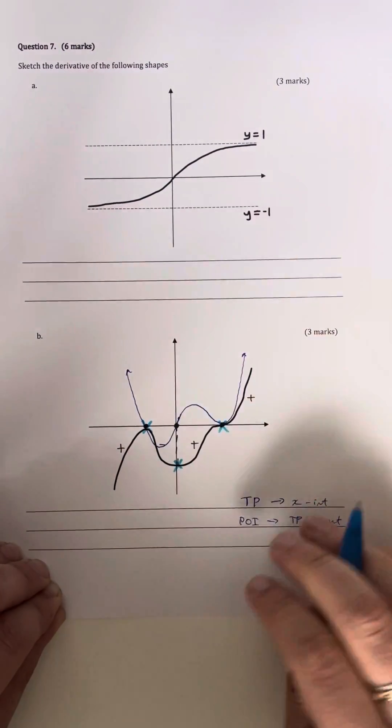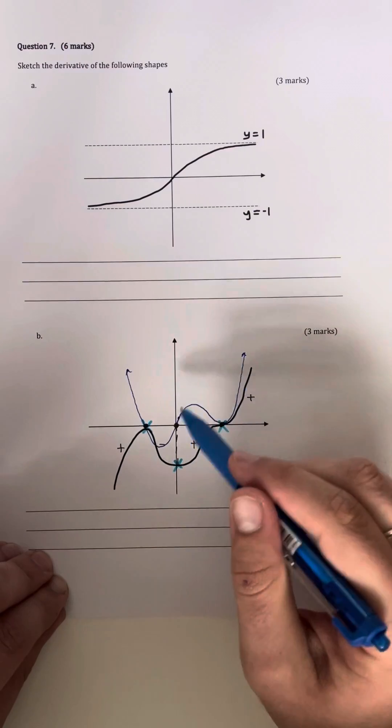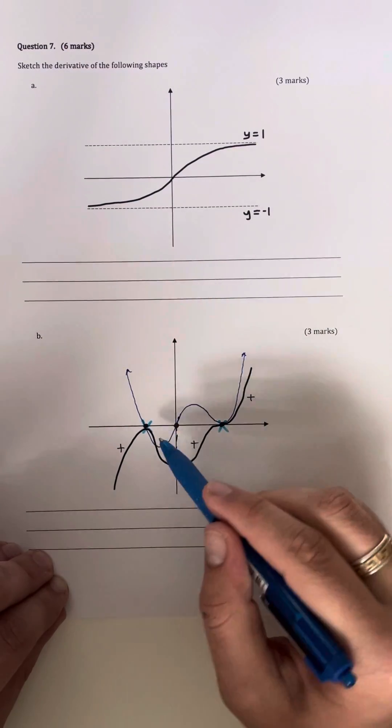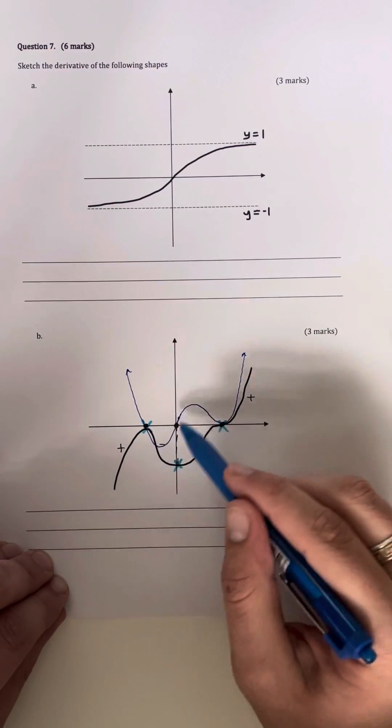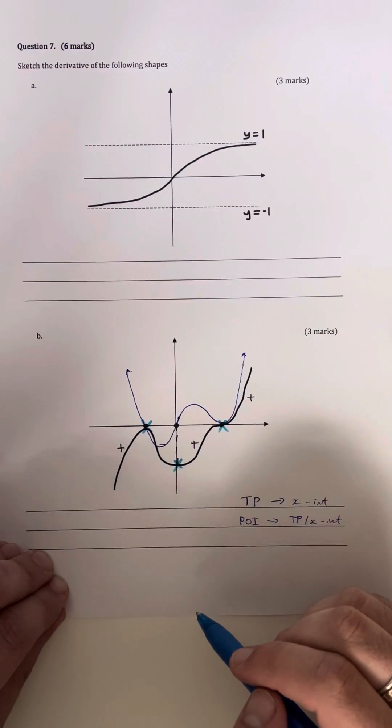Now again, the rough shape has to be good, the individual features don't really matter, as long as you have correct intercepts, correct curve, as well as a correct shape.